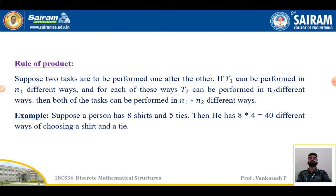Example: Suppose a person has 8 shirts and 5 ties. Then he has 8 times 5, which equals 40 different ways of choosing a shirt and a tie.